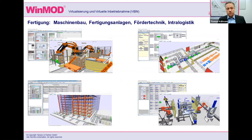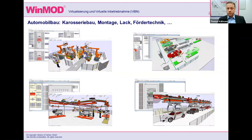Natürlich auch in der klassischen Fertigungstechnik ist das System im Einsatz. Das heißt, Maschinenbau, Fertigungsanlagen, klassische Fördertechnik bis hin zu großen Intralogistikanlagen mit Hochregalen und Robotern. Besonders hervorzuheben ist natürlich der Einsatz im Automobilbau. Große Automobilhersteller nutzen dieses System, um ihre Anlagen vom Karosseriebau über Montage bis hin zur Endmontage virtuell in Betrieb zu nehmen und diese Anlagen immer wieder neu abzusichern und zu testen — im Büro, bevor es in die reale Produktion geht.